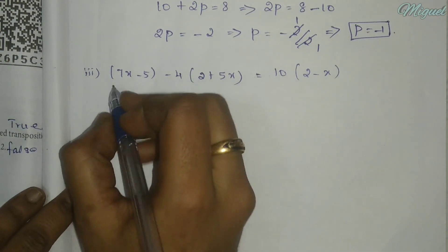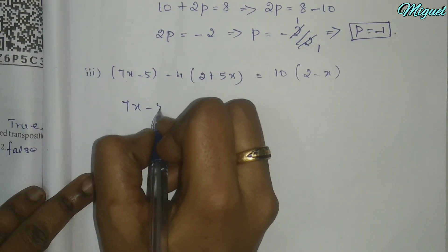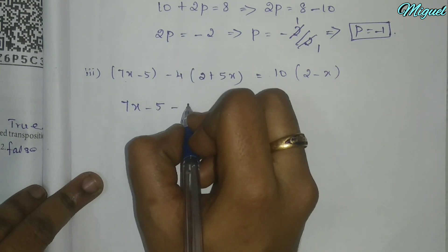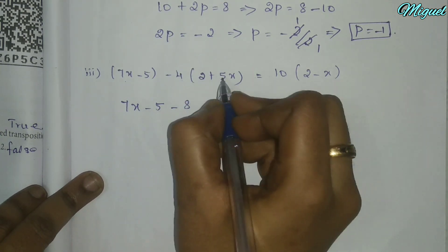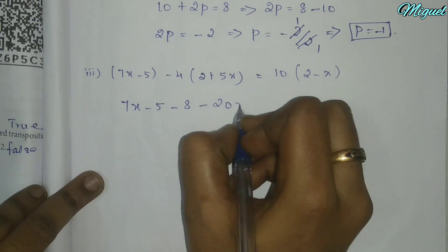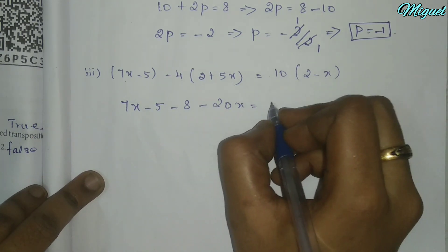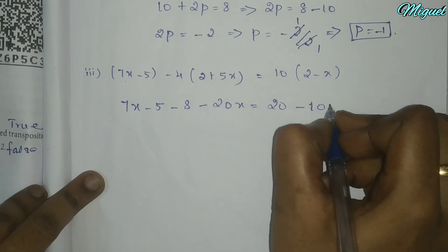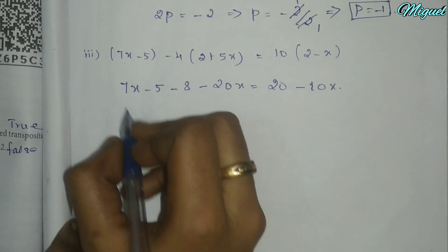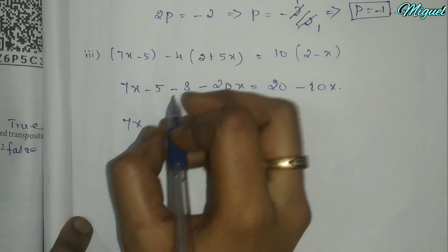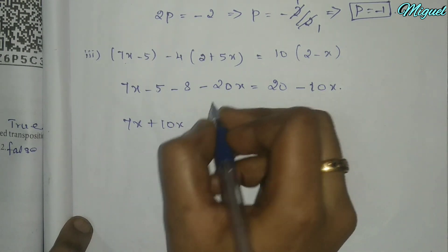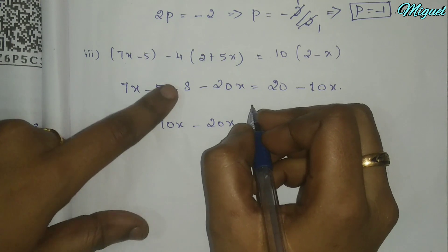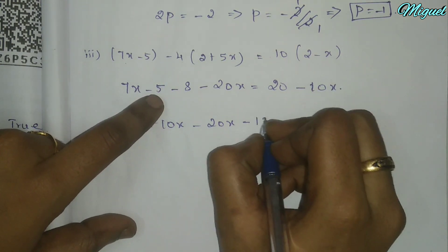Third one: remove brackets. 4 multiplied by 2 equals 8, minus 8. Minus 5 into 4 equals 20x equals 10. 10 multiplied by 2 equals 20. 10 into minus x gives minus 10x. So 7x minus 10x equals 10x minus 20x. Minus 5, minus 8 gives minus 13.